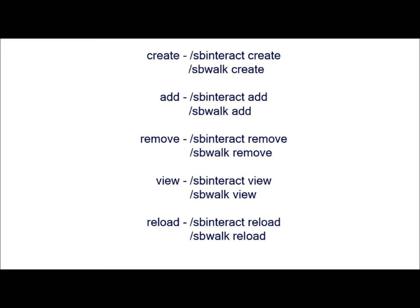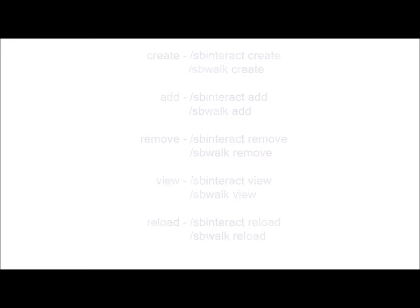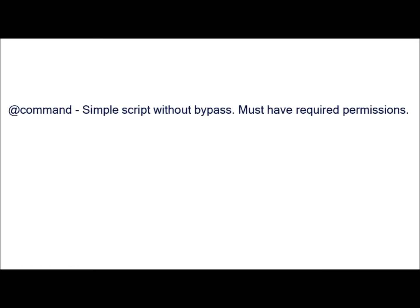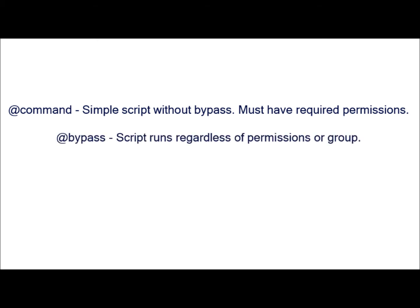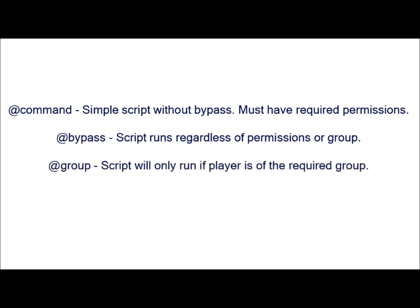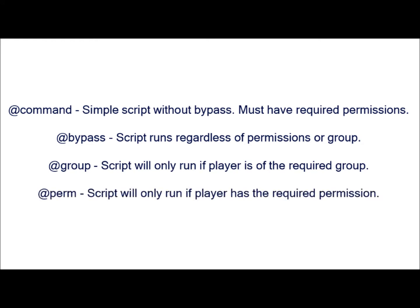Now that you know the triggers and the command types, we will move on to the options. I like to divide the options into two groups: Directional and Functional. The directional options include, but are not limited to: AtCommand, which is a simple script without bypass and works for people with the necessary permissions; AtBypass, which runs regardless of the permissions or groups; AtGroup, which will only run if the player is of the required group; and AtPerm, which will only run if the player has the required permission.